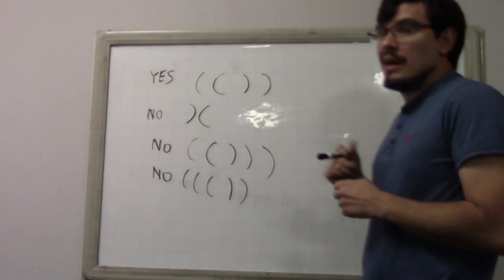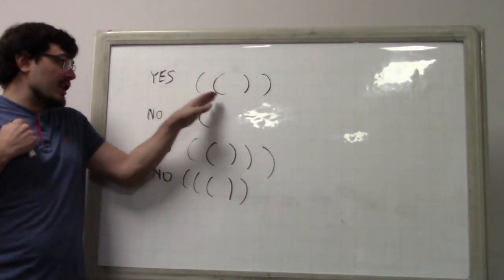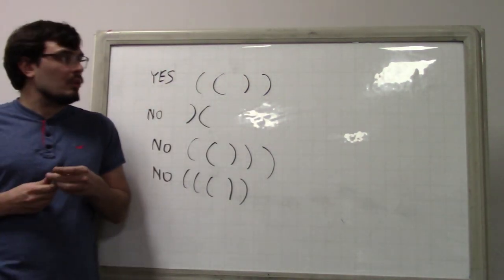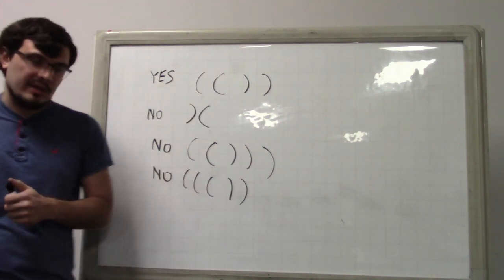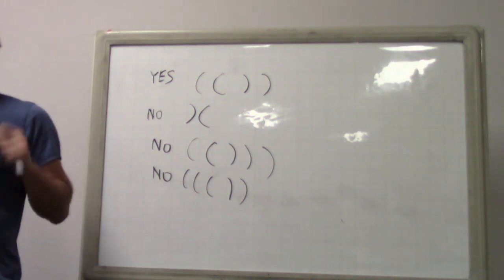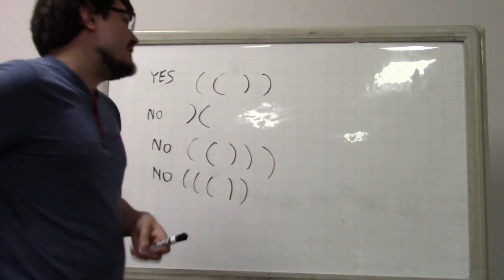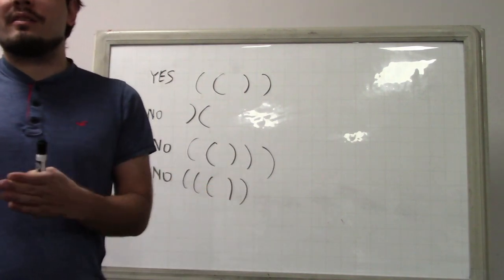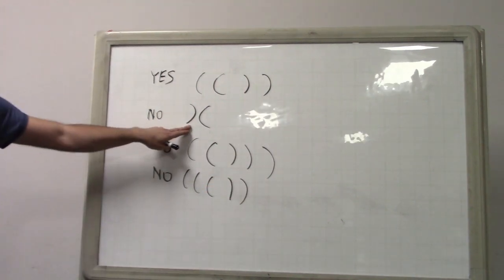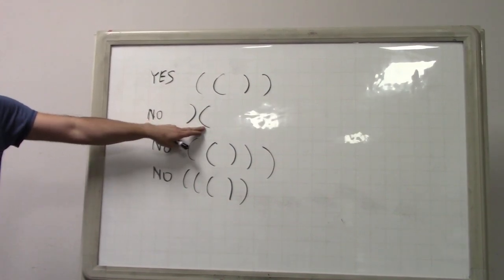You just keep a counter of how many open parentheses you have. When you see another opening parenthesis, you add one to that count. When you see a closing parenthesis, you subtract one. If you would ever take the counter negative, then you can immediately reject the string — even if in the end the total would have been zero, you still have to reject. For example, this case is invalid even though there are equal numbers of opening and closing parentheses.